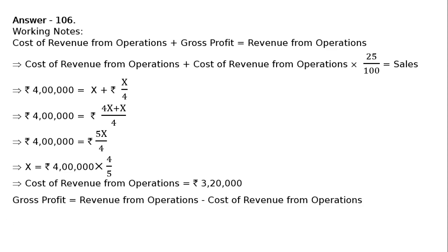Now, gross profit equals Rs. 4 lakh minus Rs. 3 lakh 20,000, which equals Rs. 80,000.